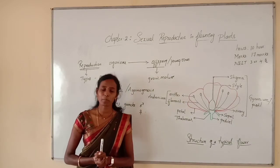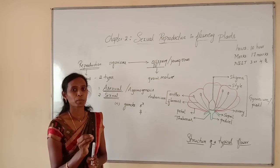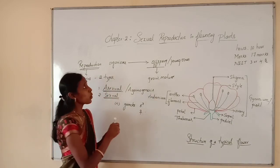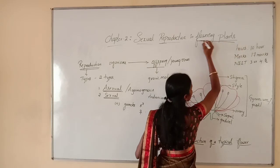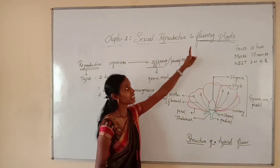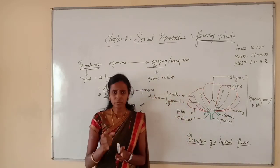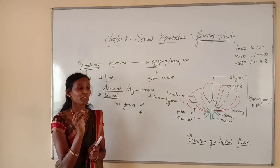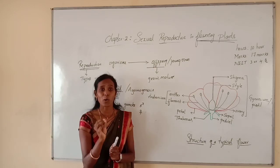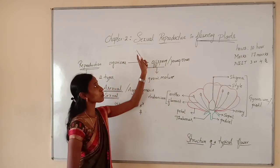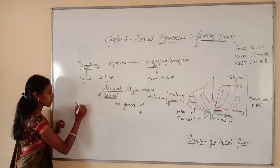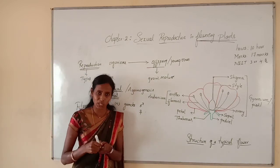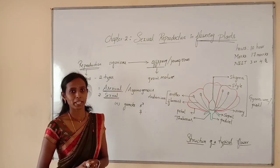Sexual reproduction is a type of reproduction in which offspring are produced by the process of formation and fusion of gametes. Now we will talk about flowering plants and why we need to study sexual reproduction in their case. Angiosperms are called flowering plants as they produce flowers. Flowering plants have specialized organs for the process of sexual reproduction. Hence, the flower is regarded as the organ of sexual reproduction, or reproductive organ, in case of flowering plants.